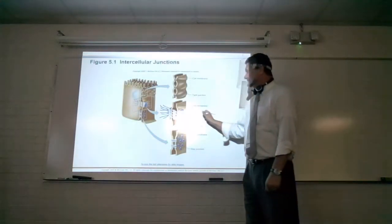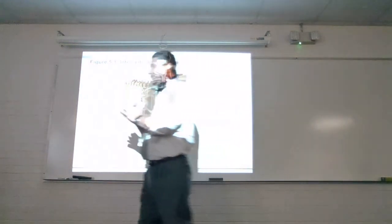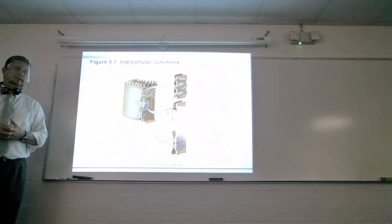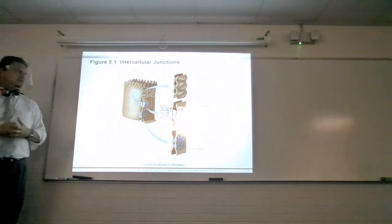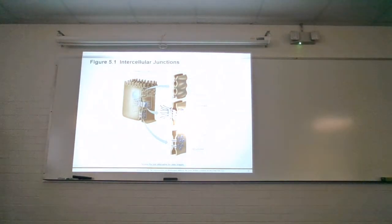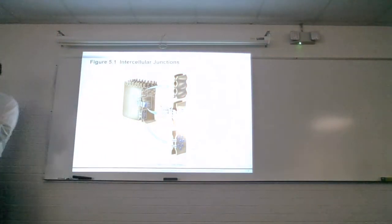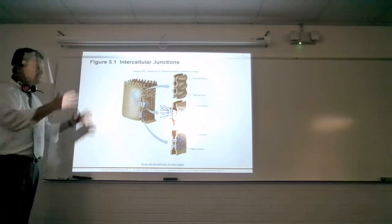Another connection found in intercalated discs is the desmosome. The key word for it is a spot weld — it is for really strong connections. In cardiac muscle, when it contracts, it has to pull on the other cardiac muscle. So desmosomes are for really strong connections. The last one is the tight junction, which is more like stitching. It is more for waterproofing — making a solid seal, not necessarily for strength.